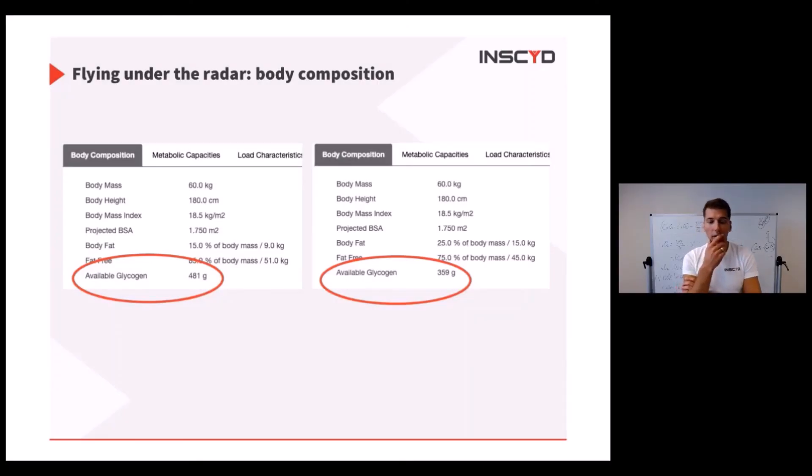Another thing that comes out of body composition is glycogen. Glycogen is stored in the muscles. The more muscles you have, the more glycogen you have. The more you train, the more glycogen you have. If you change your diet, the more glycogen you have. It's obviously the most precious fuel. If you haven't seen it, we have a very good blog article about why you need to think about glycogen in your working muscles and not in the whole body, because it cannot transfer from upper body to lower body, for example.